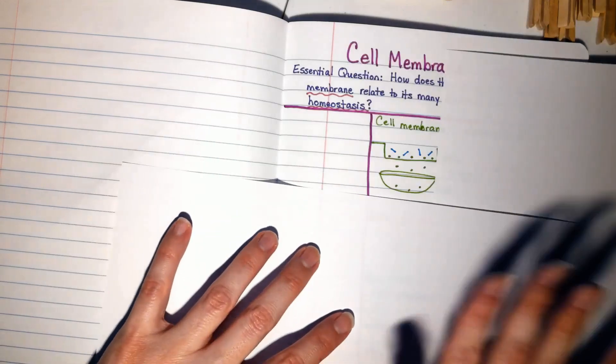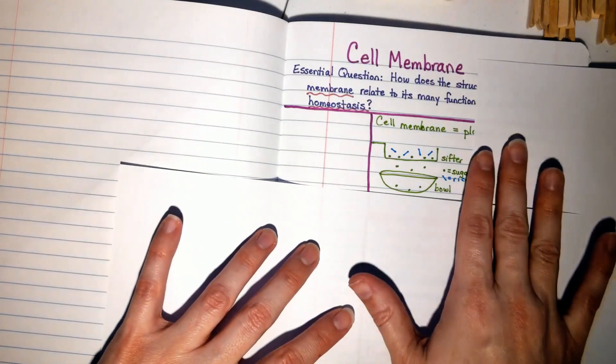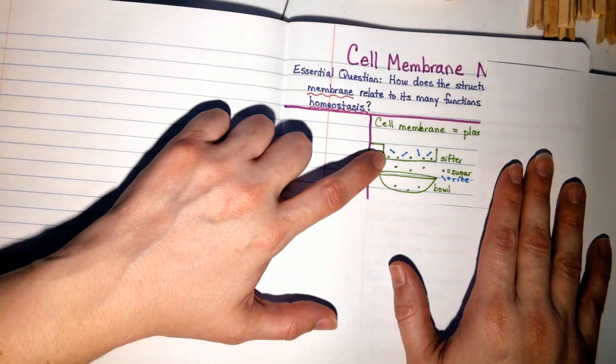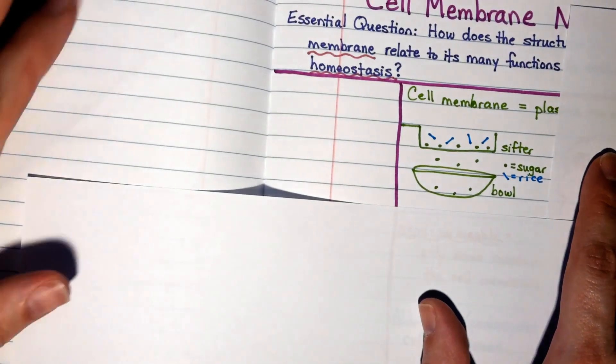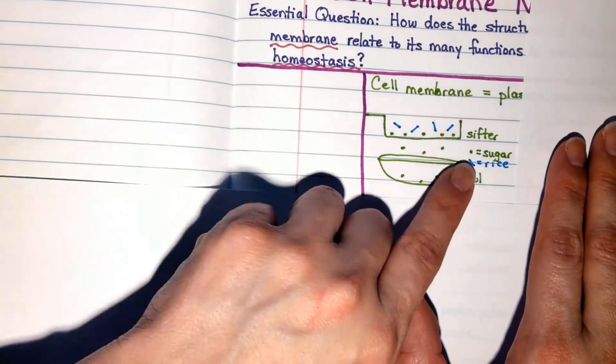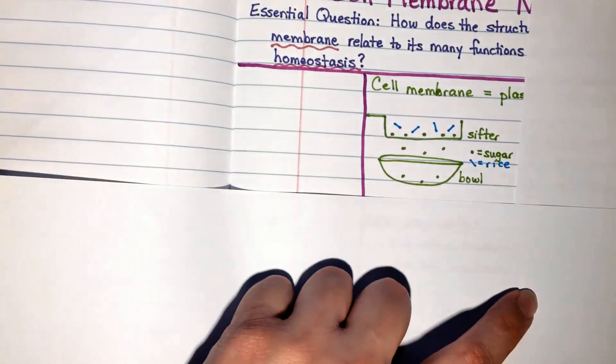Let's go back to our notes and let's record some of this information. Now to remind myself about this experiment that we've just done, I have drawn a picture of it. So I have my sifter here with my sugar and rice grains in it, and I've shown that the sifter is allowing the sugar to fall through into the bowl but the rice can't get through.